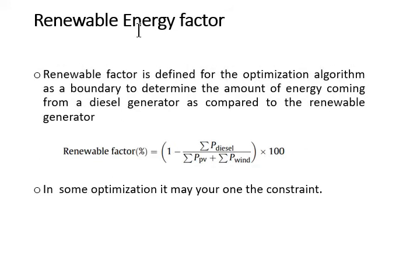Now let's discuss the renewable factor. Renewable factor is defined for algorithm as a boundary to determine the amount of energy coming from a diesel generator as compared to the renewable generator, and given by this following relation. The renewable factor of 100% shows the ideal system based on renewable resources only. However, the renewable factor of 0% shows that the amount of power coming from a diesel generator is equivalent to the power from renewable resources.